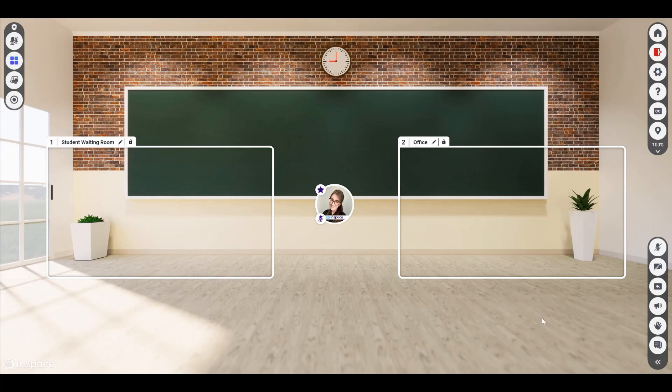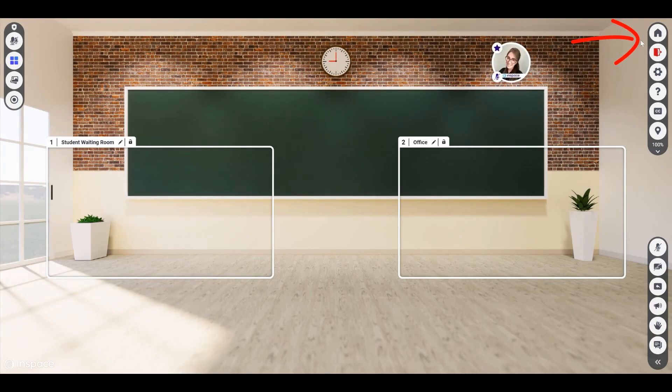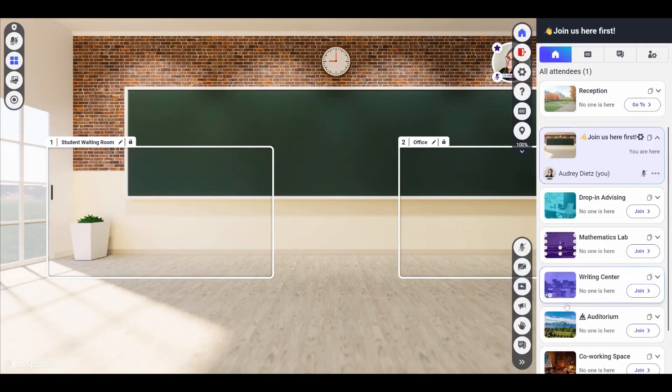When it's time to move to a different space, use the home icon to open the sidebar. Select a new room and you'll move to a different space.